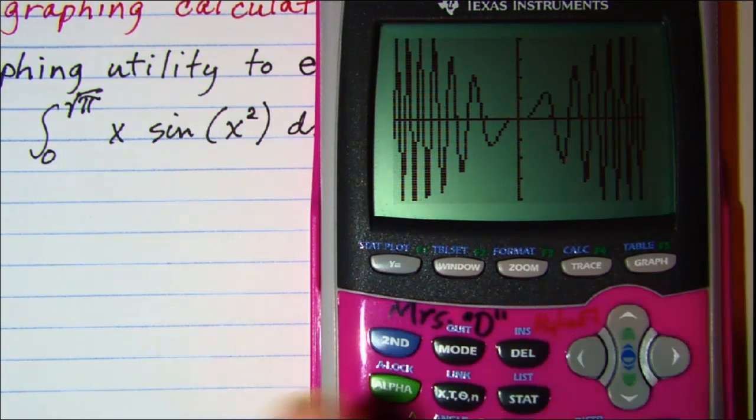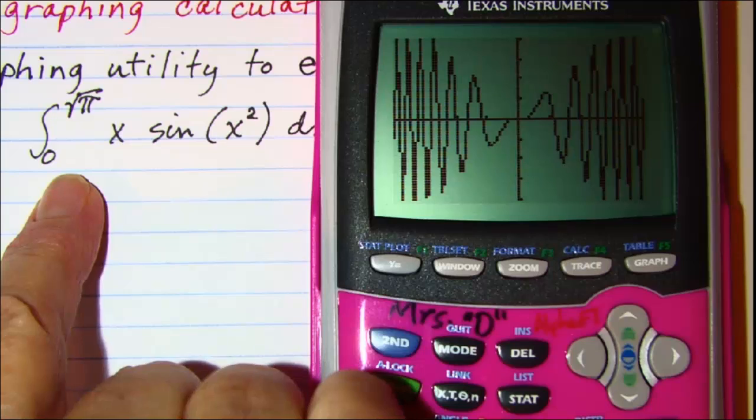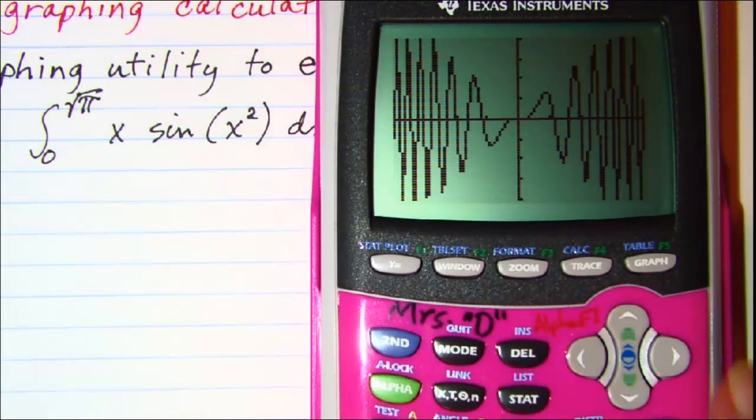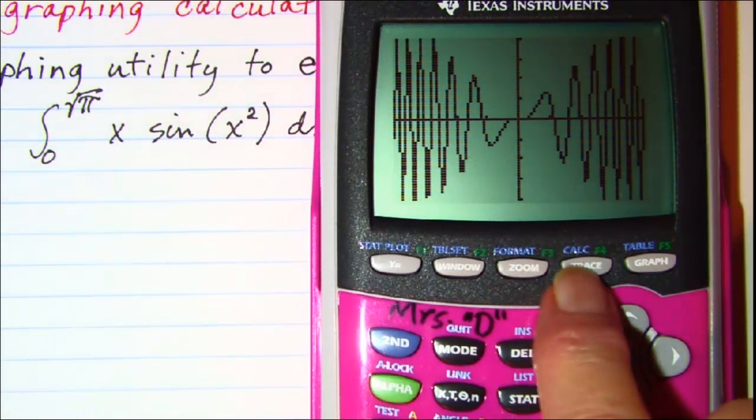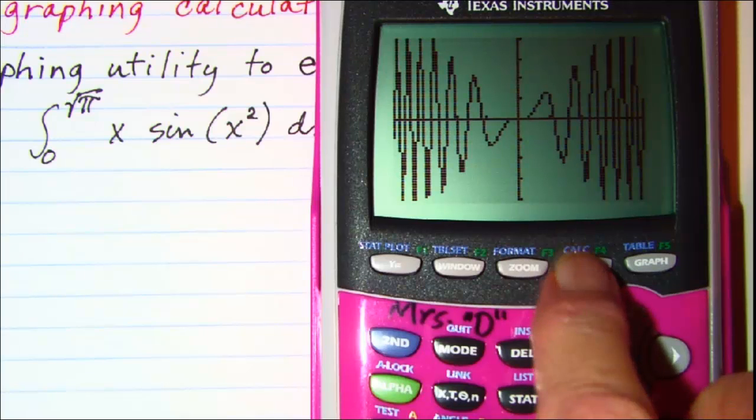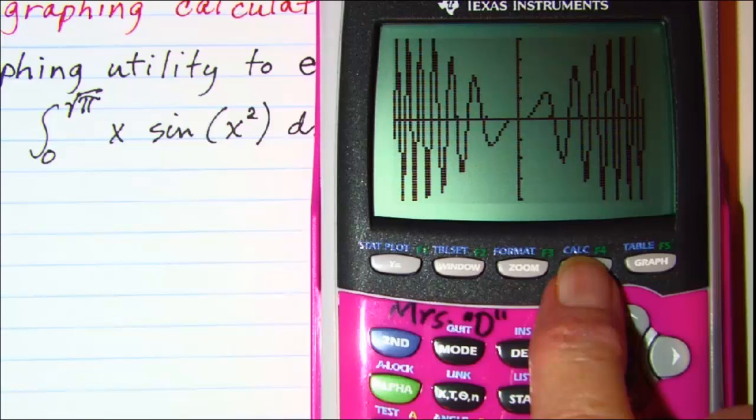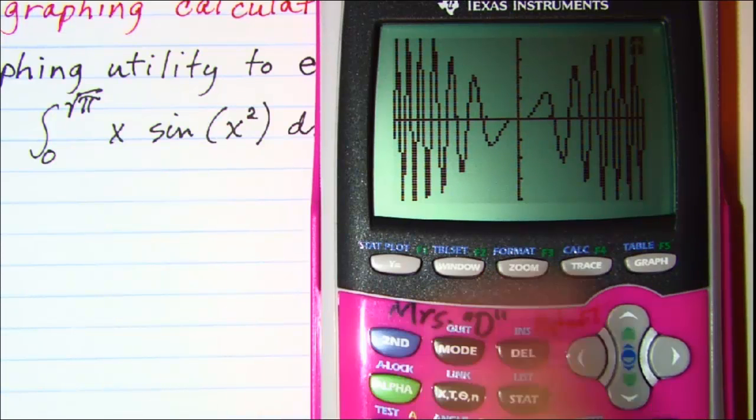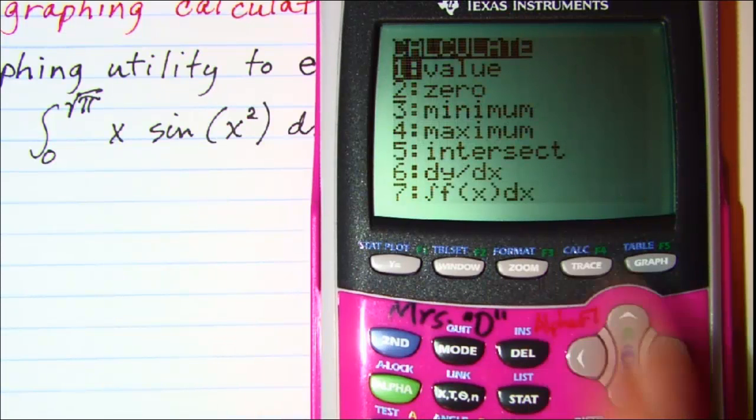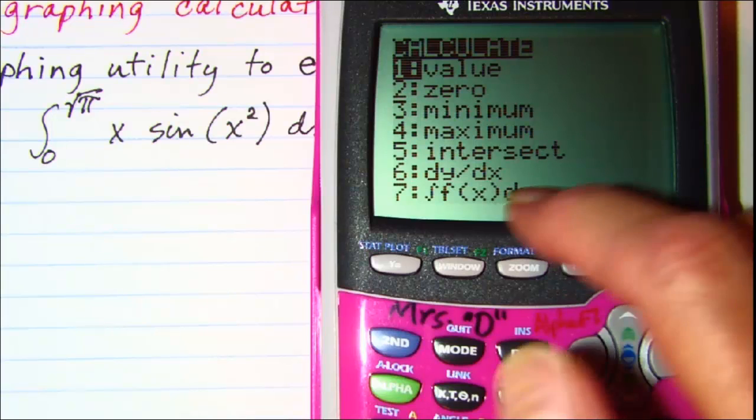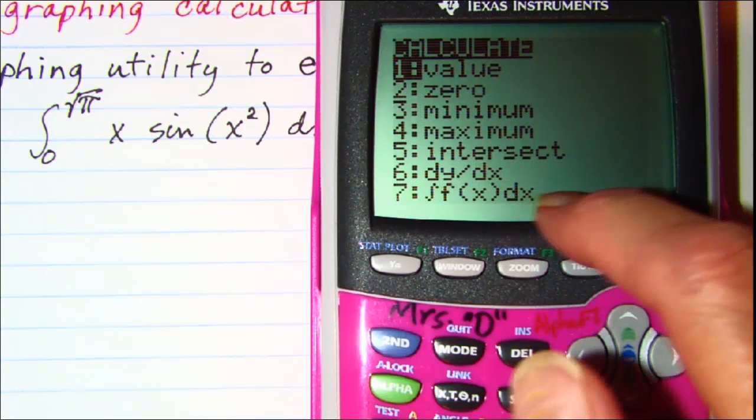Now we want to integrate from 0 to square root of pi. So the way to get the calculator to do that is to press the calc button right here which is above the trace button so we want 2nd calc and we see that option number 7 is our integral.